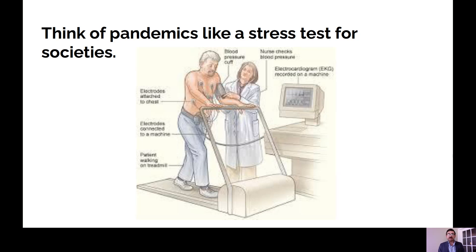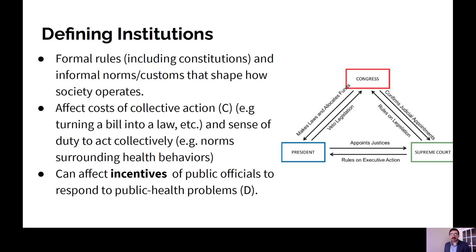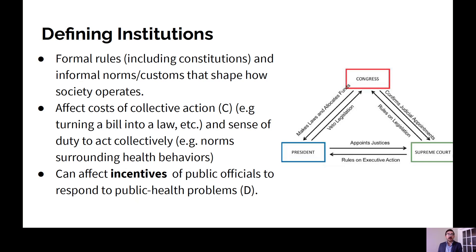So what do we mean by institution? When we talk about institutions, we mean formal rules — including constitutions, but also policies, laws, and judicial rulings — as well as informal norms and customs, such as a norm of reciprocity like helping your neighbor or that voting is a good thing to do. These formal and informal rules shape the way society operates.